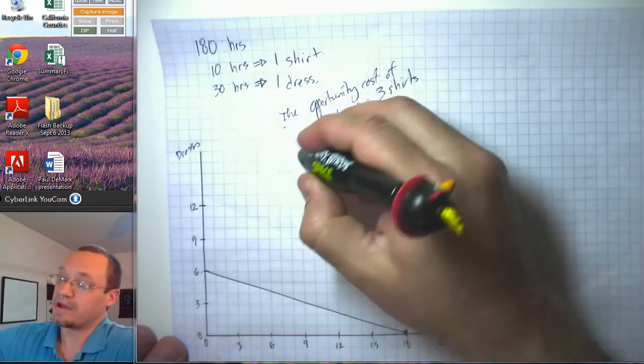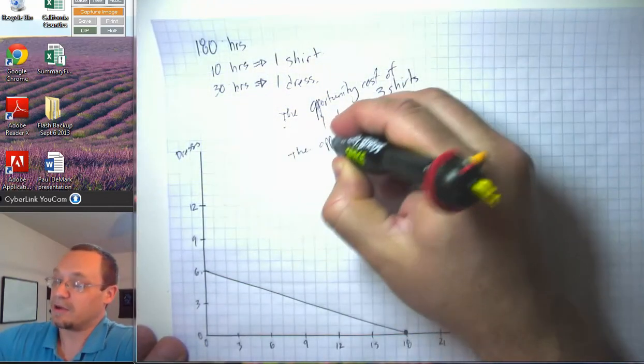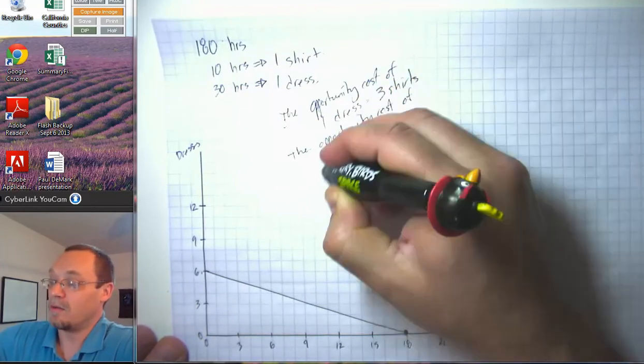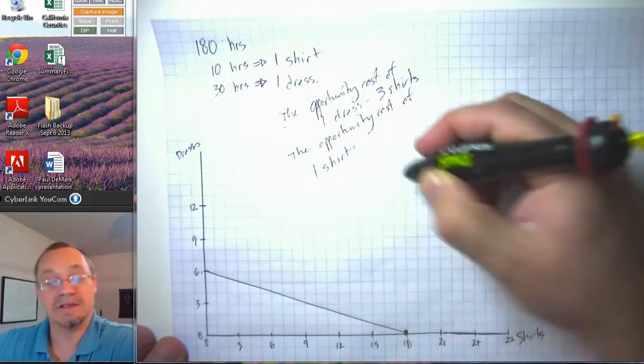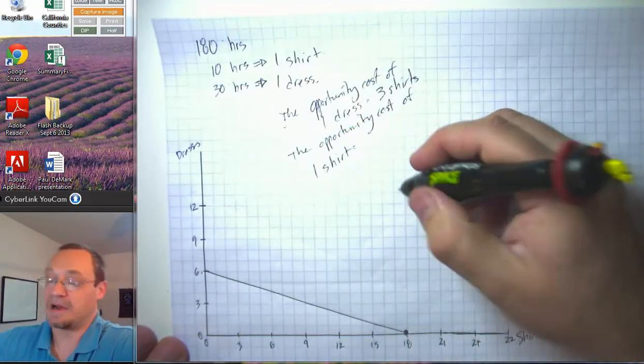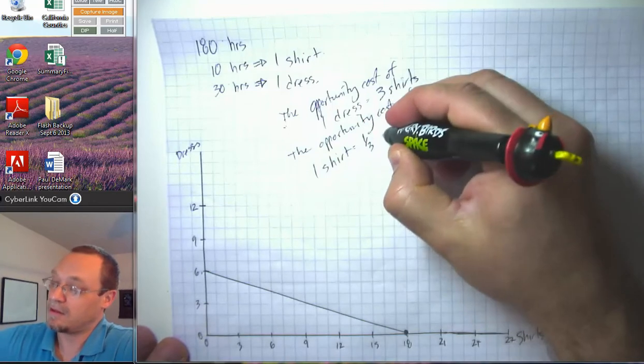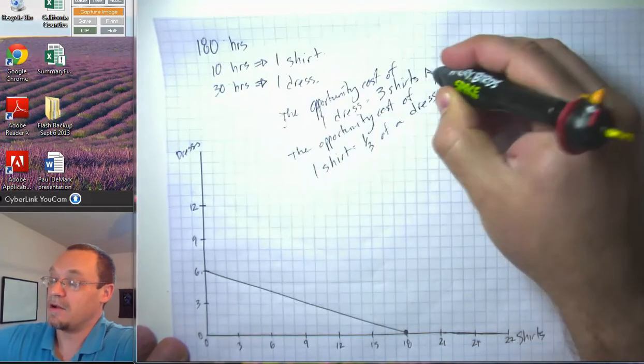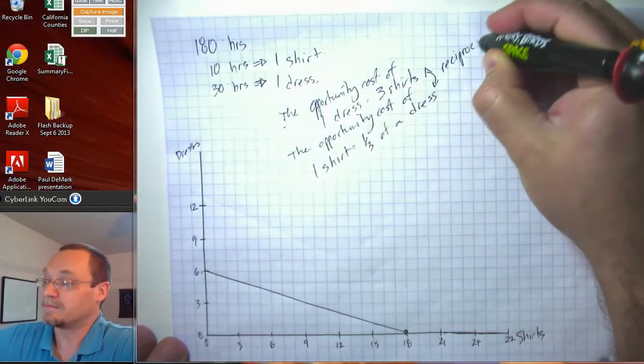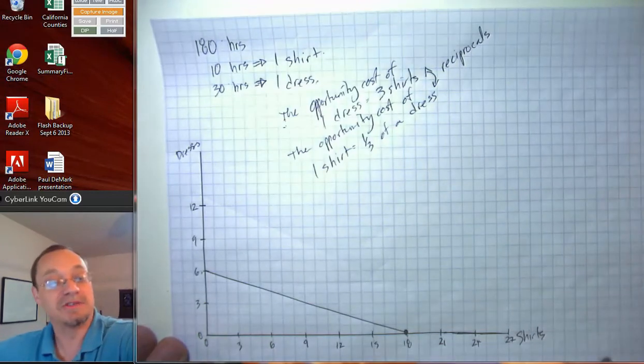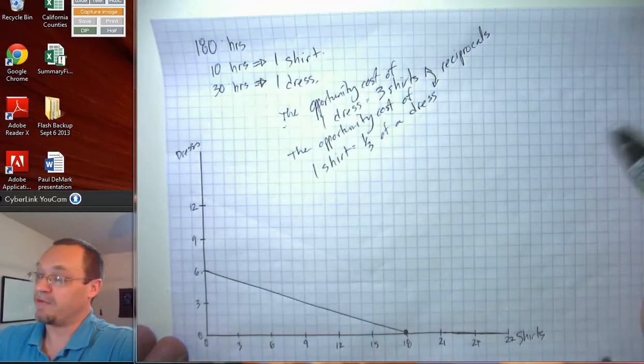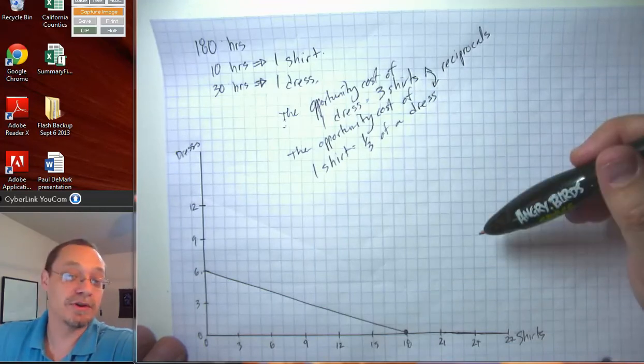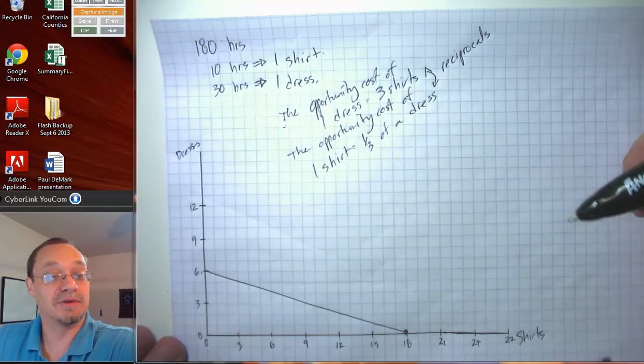Okay, we could also say here notice the opportunity cost of one shirt is one-third of a dress. And notice these two are reciprocals. And that's the way it's always going to be in these examples here. So if you figure out the opportunity cost of one good in terms of the other, you can turn that on its head, make the reciprocal, and get the opportunity cost of the other.